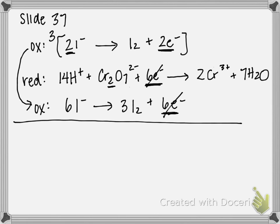And then I can rewrite everything. So 14 H plus, and these are aqueous. Make sure we include our phases. Plus six I minus, which is also aqueous. Plus Cr2O7 two minus, that is aqueous.